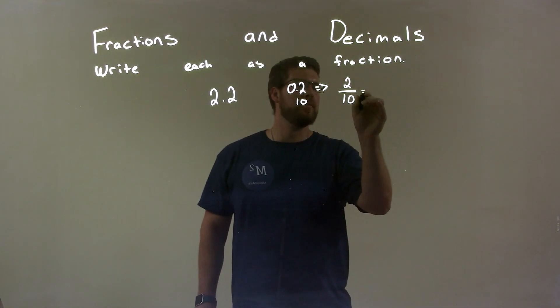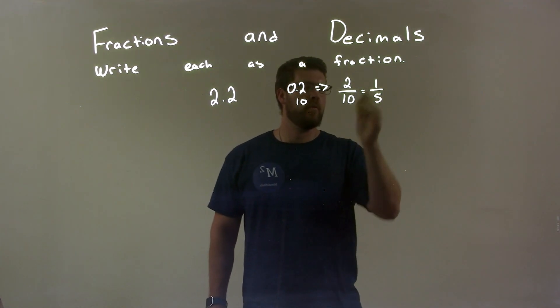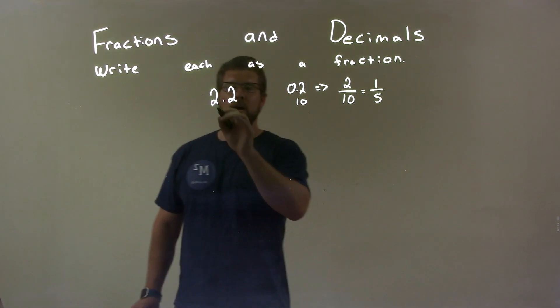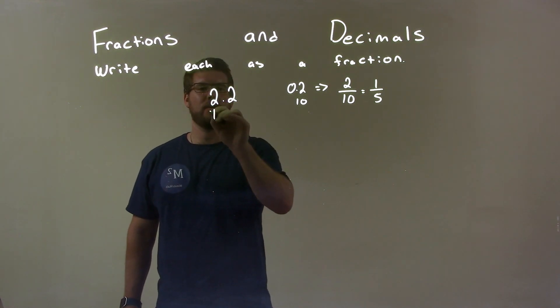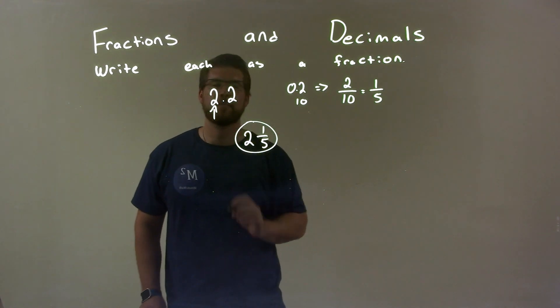Well, 2 over 10 simplifies to be 1 fifth. We divide both by 2, right? So we have 1 fifth. Well, that 1 fifth combines with that first two value right here, okay? And so we have 2 and 1 fifth as our final answer.